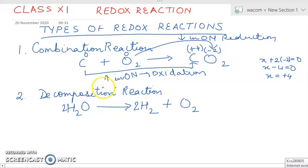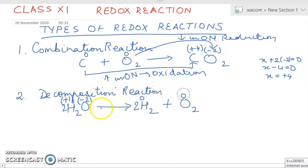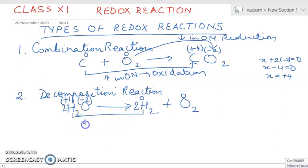Now let's look at the oxidation states. In water, hydrogen is plus one and oxygen is minus two. In the products, hydrogen gas is zero and oxygen gas is zero. Hydrogen's oxidation number decreases from plus one to zero — that is a decrease in oxidation number, so hydrogen undergoes reduction.